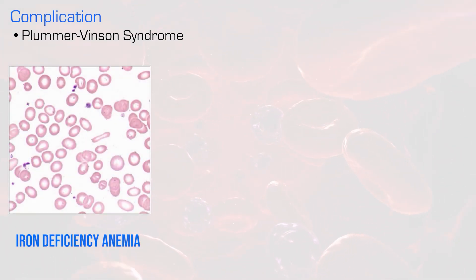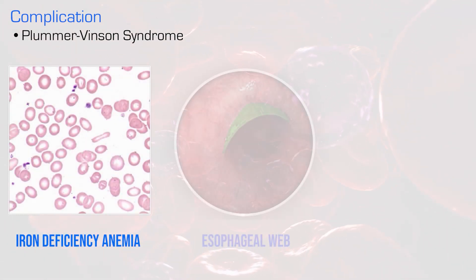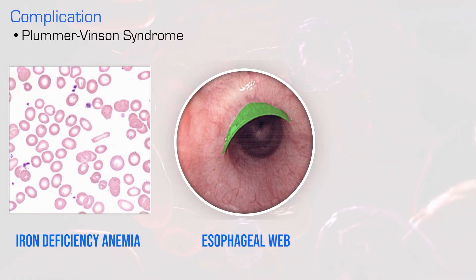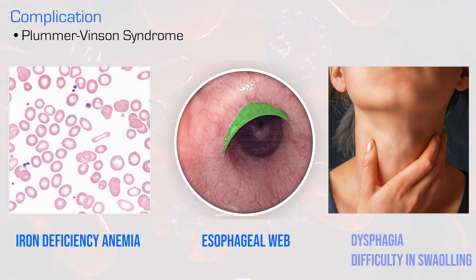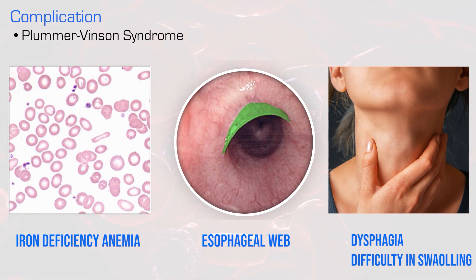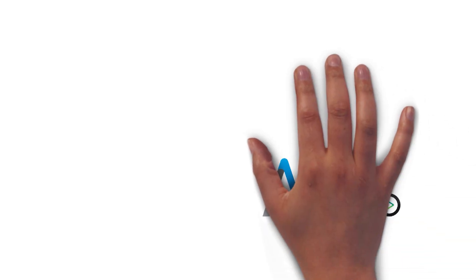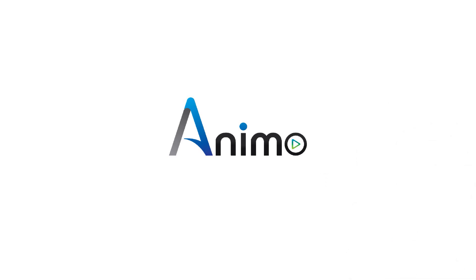A very important complication is Plummer-Vinson syndrome, which involves a triad of underlying pathologies: number one, iron deficiency anemia; number two, post-cricoid or esophageal webs; and number three, these esophageal webs cause dysphagia. This triad of three pathological conditions is known as Plummer-Vinson syndrome, and this concludes our section on iron deficiency anemia.